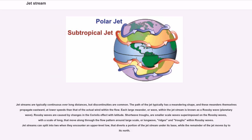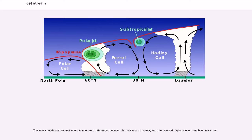Rossby waves are caused by changes in the Coriolis effect with latitude. Short wave troughs are smaller scale waves superimposed on the Rossby waves, with a scale of long, that move along through the flow pattern around large scale, or long wave, ridges and troughs within Rossby waves. Jet streams can split into two when they encounter an upper level low, that diverts a portion of the jet stream under its base, while the remainder of the jet moves by towards north. The wind speeds are greatest where temperature differences between air masses are greatest, and often exceed. Speeds over have been measured.